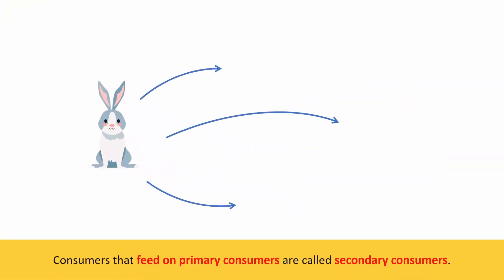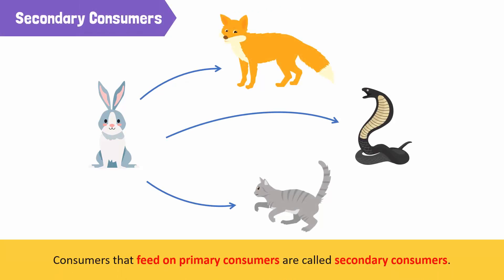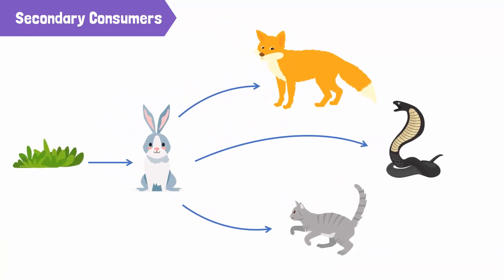Organisms that feed on primary consumers are called secondary consumers. Foxes, snakes, owls, and cats are examples of secondary consumers. These consumers obtain their energy from plants indirectly.